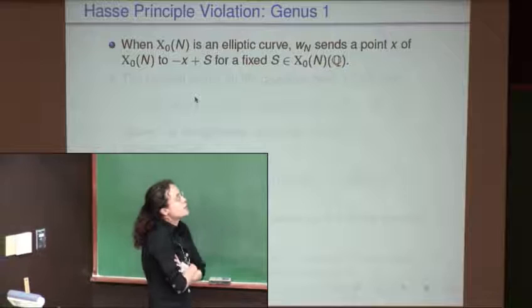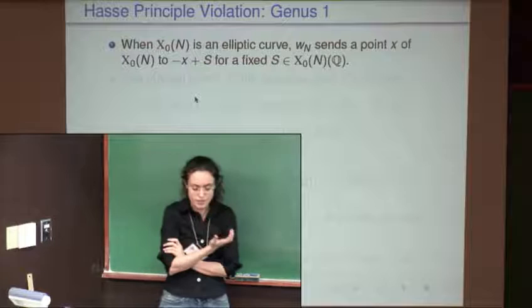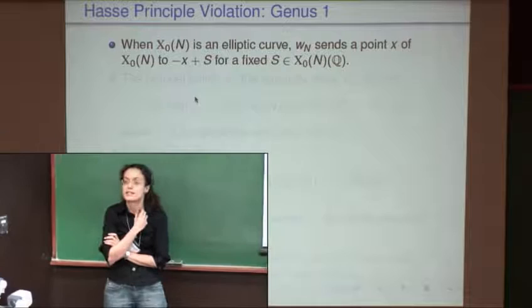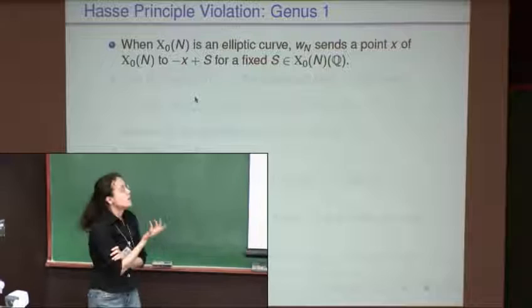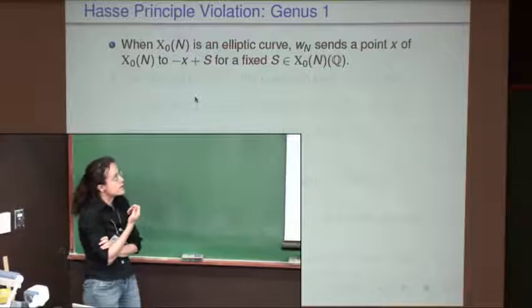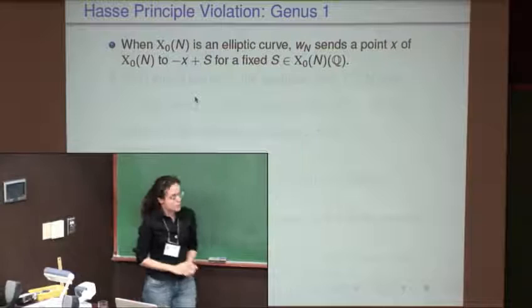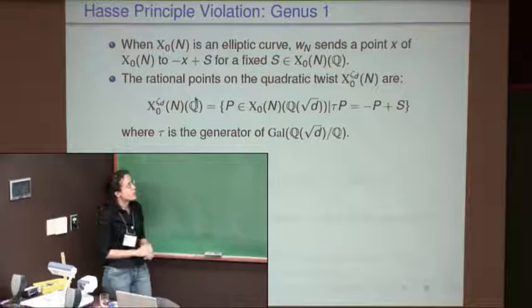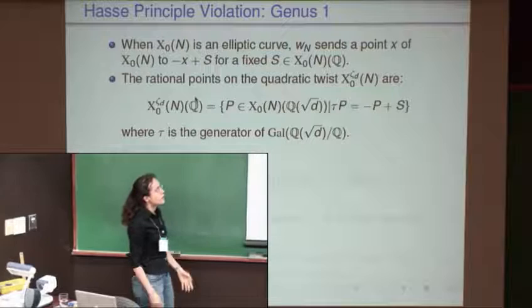For 2-torsion points, the local-global trace principle holds if and only if there is a rational point on the twisted elliptic curve E_d that is non-trivially 2-divisible over Q(√d) — meaning there is a point P which was not 2-divisible as a point over Q, but becomes 2-divisible when you extend the field, i.e., P/2 lives in E(K) but not in E(Q). Here E_d literally means the quadratic twist: if E: y² = f(x), then E_d: dy² = f(x).